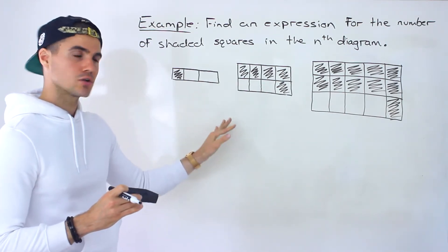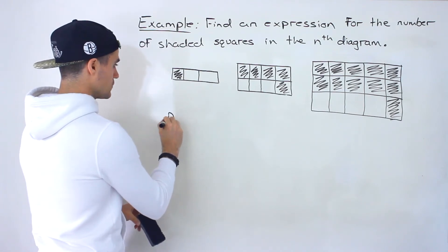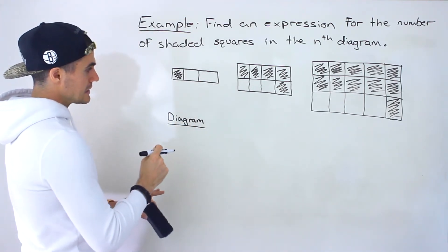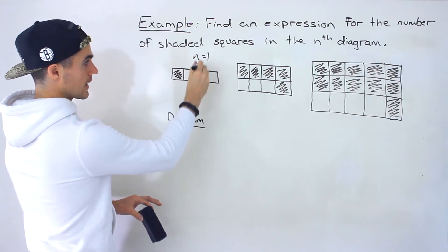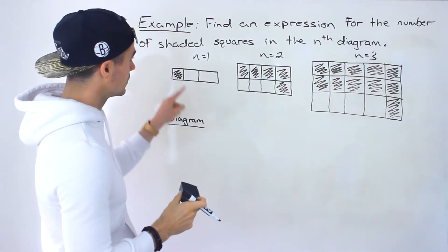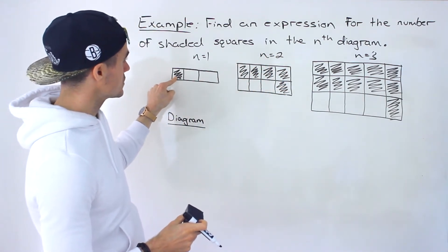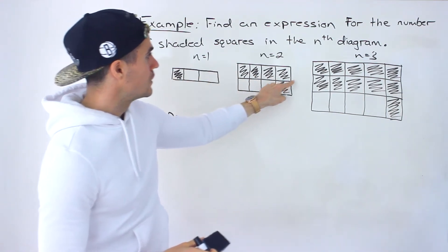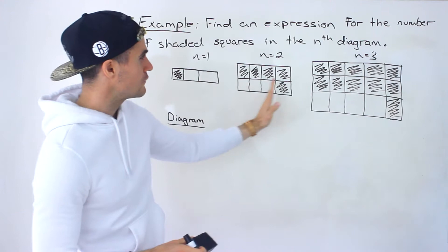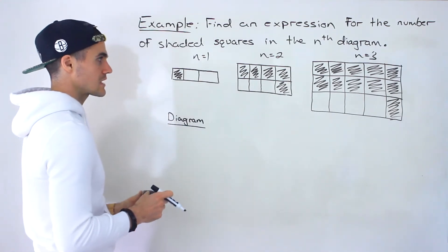Make sure you watch the previous examples before this one. As in those examples, what we want to do is create some columns to relate the diagram number to the number of shaded squares. This is the first diagram so n equals one, here n is two, here n is three, and so on. Notice the number of shaded squares is one, five, eleven — it's a little tough to directly get an expression from just those.